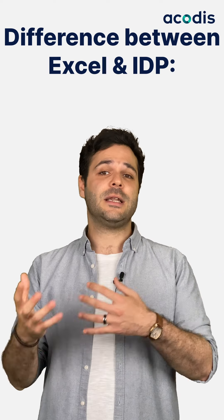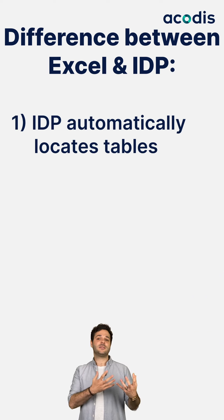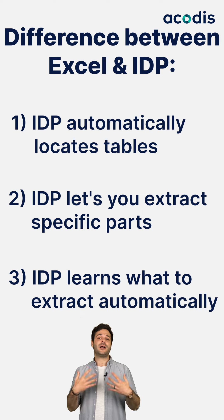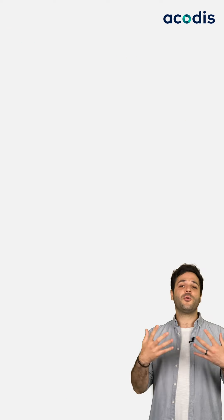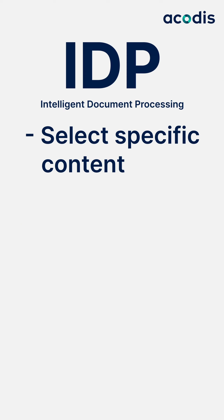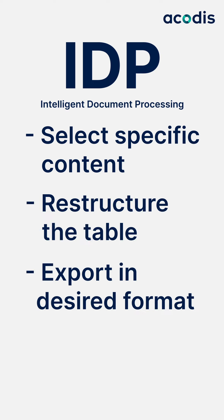One big difference between using IDP to extract a table versus Excel is that IDP automatically locates tables in your PDFs, lets you extract the specific parts of a table that matter to you, and learns to extract that data from future documents automatically. For example, suppose you're only interested in analyzing 3 out of 5 table rows — with IDP, you can select that specific content, restructure the table, and export that tabular data as an XML or JSON file.